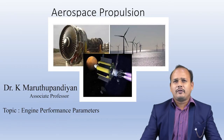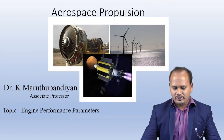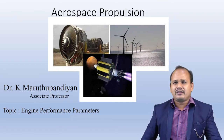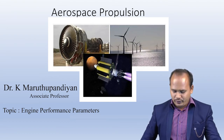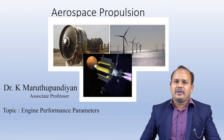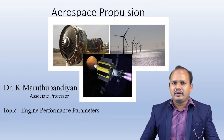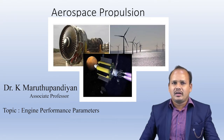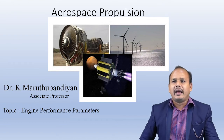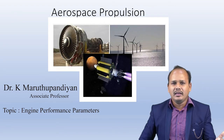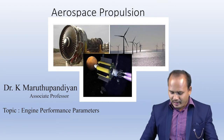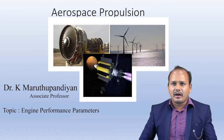Hello everyone, welcome back to the lecture series on Aerospace Propulsion. In the previous lecture we have seen what are the different parameters that affect the thrust produced by an aircraft engine — how airspeed affects the thrust, the nozzle configuration, mass flow rate of air entering the engine, and variation in altitude — how these different parameters cause variation in the thrust produced by the aircraft engine.